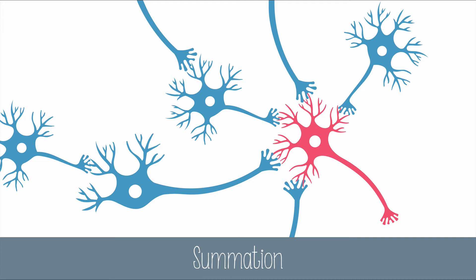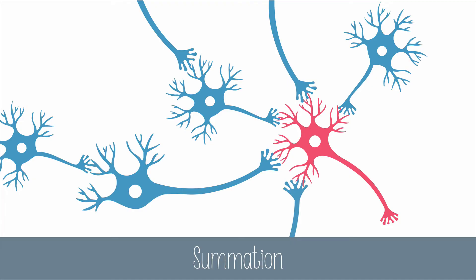A neuron might receive both inhibitory and excitatory information at the same time from many different neurons. It's especially common in the brain to have multiple neurons synapse with the dendrites of one neuron — sometimes it's hundreds or even thousands. So how does the neuron know whether to send an action potential or not?